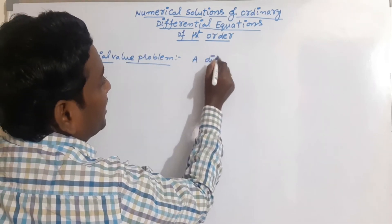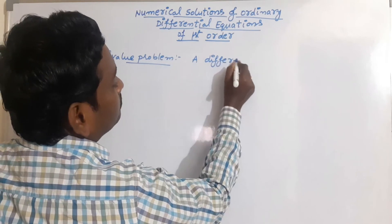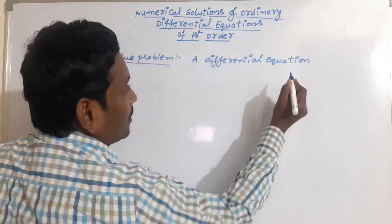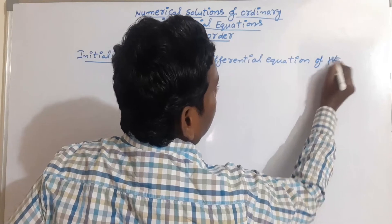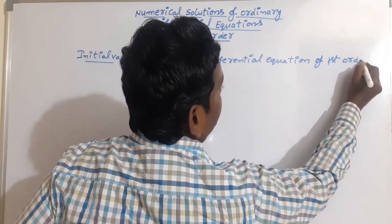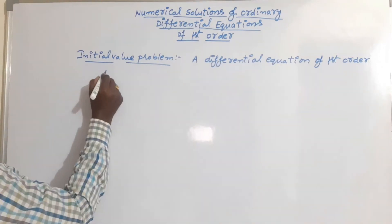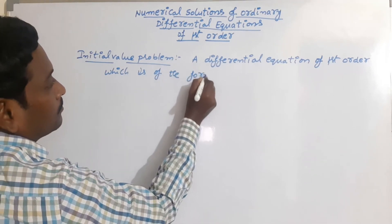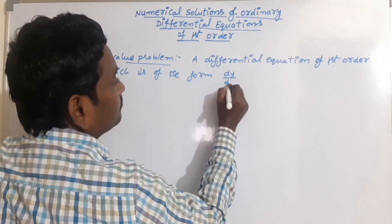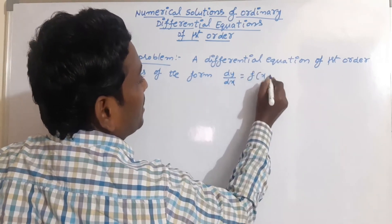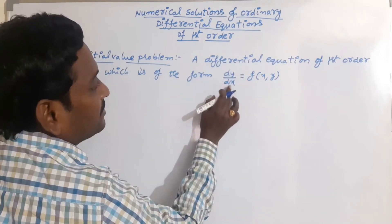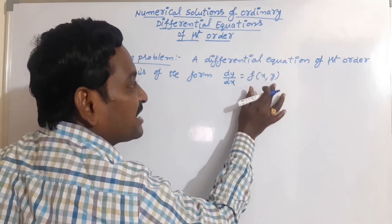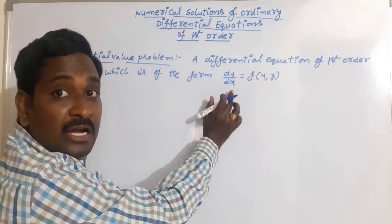Write the definition: a differential equation of first order which is of the form dy by dx is equal to f of x comma y. So, the derivative of y with respect to x is equal to f of x comma y. Here, f of x comma y represents a function in terms of x and y. Here, y is called the dependent variable and x is called the independent variable.